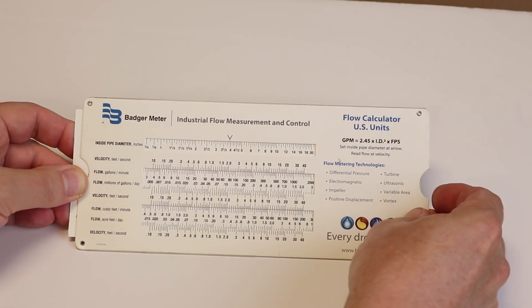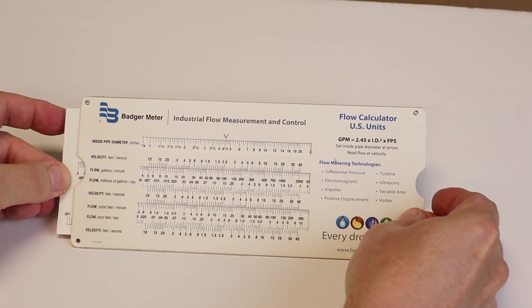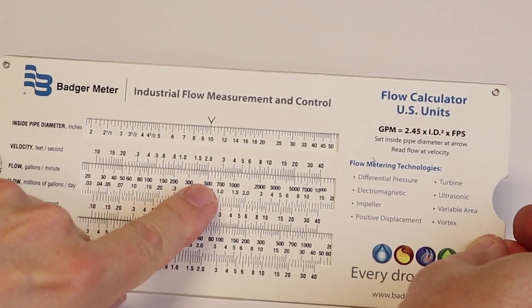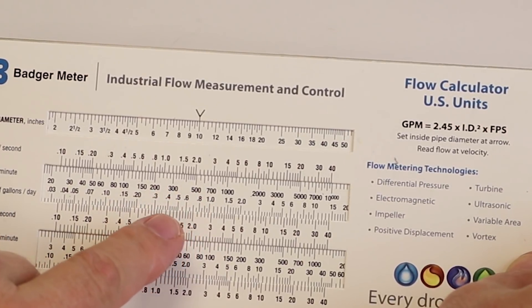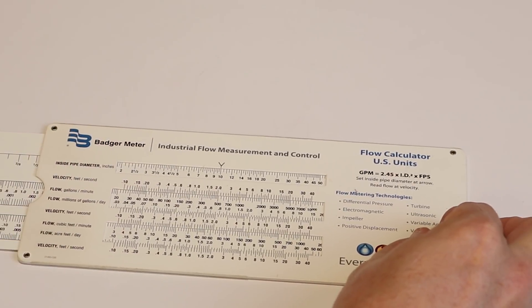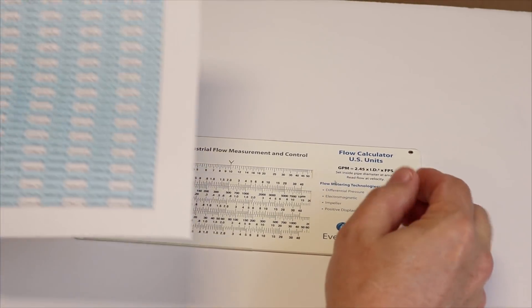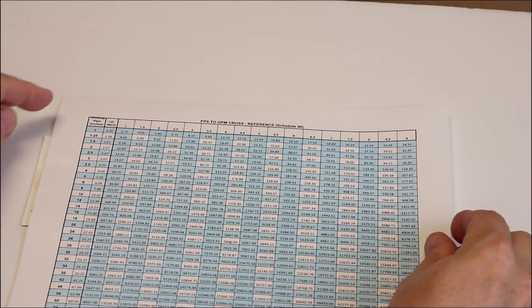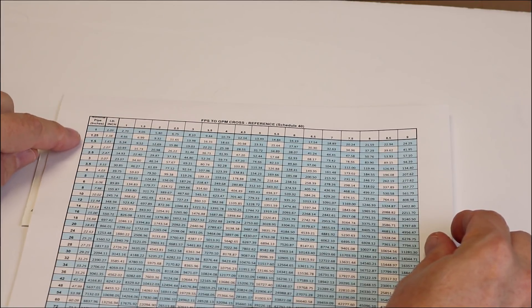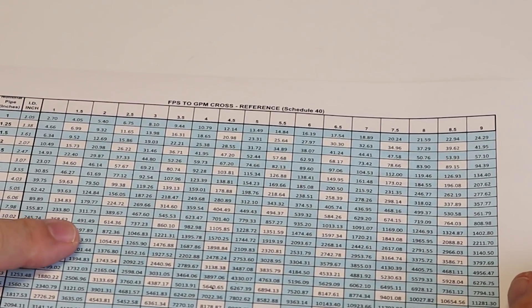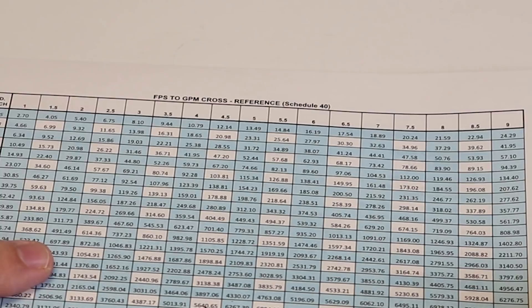Let's say I have a 10-inch pipe at 2 feet per second. I would adjust the slide ruler to the 10-inch pipe, and then 2 feet per second is just under 500 GPM — about 490 GPM. Or, I could take a cross-reference chart — a feet-per-second to GPM cross-reference chart — come down to a 10-inch pipe, go over to 2 feet per second, and there it says 491 gallons per minute.